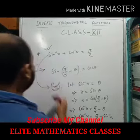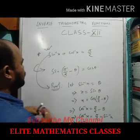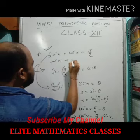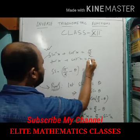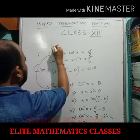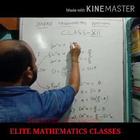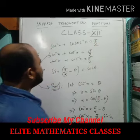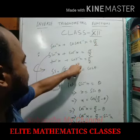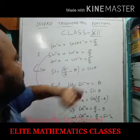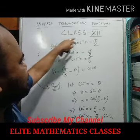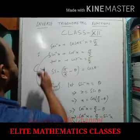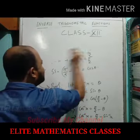Two more important formulas: tan⁻¹x + cot⁻¹x = π/2, because tan(π/2 − θ) = cot θ. And sec⁻¹x + cosec⁻¹x = π/2, because sec(π/2 − θ) = cosec θ. So the relation in inverse is sec⁻¹x + cosec⁻¹x = π/2.